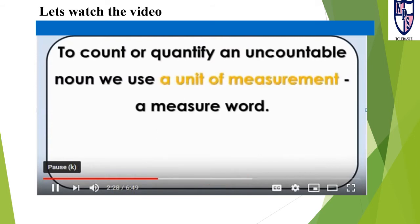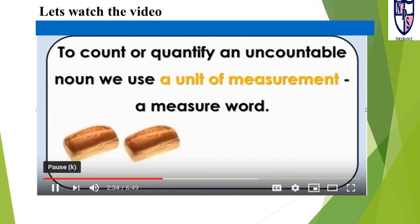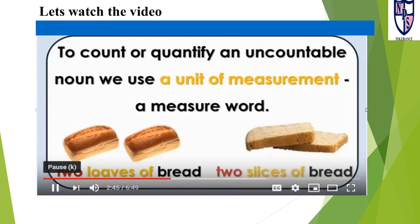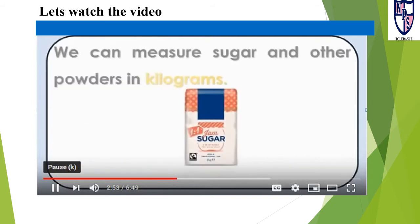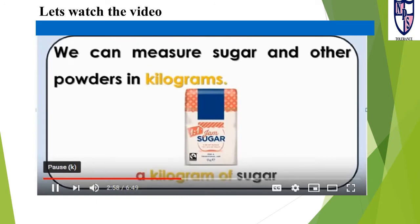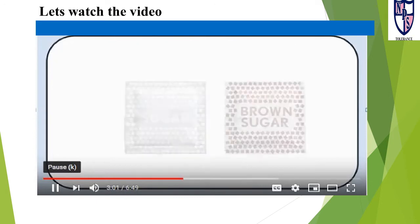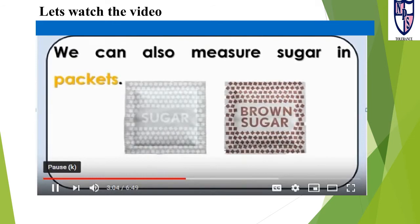To count or quantify an uncountable noun, we use a unit of measurement — a measure word. For example, we cannot usually say two breads because bread is uncountable, but we can say two loaves of bread or two slices of bread. Loaf and slice are measure words for bread. We can measure sugar in kilograms — a kilogram of sugar — or in packets — two packets of sugar.